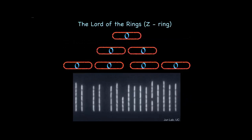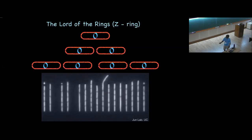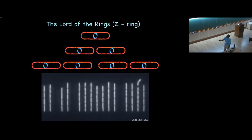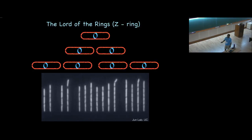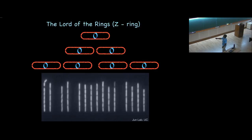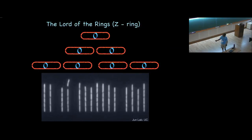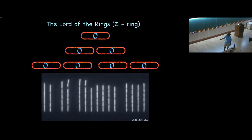Since then we have come very far — there is indeed the 'lord of the rings.' You can see E. coli cells growing in microchannels; they are essentially immortal. As long as there is a nutrient supply flowing, these cells can continue to divide for an enormous number of divisions. The mother cell keeps giving rise to daughter cells through continuous formation of this FtsZ ring, and cells divide into two.